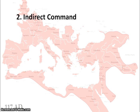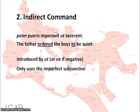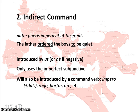The second use is an indirect command — a reported command rather than a direct imperative. For example: 'pater pueris imperavit ut tacerent' — the father ordered the boys to be quiet. Notice again it is introduced by 'ut' or 'ne' if negative. You can tell this apart from a purpose clause because there is a verb of ordering, like 'impero', which takes the dative — hence 'pueris' is dative. Other command verbs include 'rogo' (I ask), 'hortor' (I encourage), and 'oro' (I beg). Note that 'iubeo' does not use this construction but takes accusative plus infinitive. This use also only uses the imperfect subjunctive.